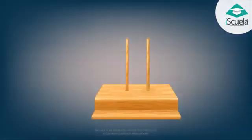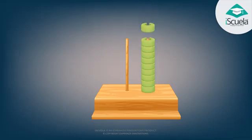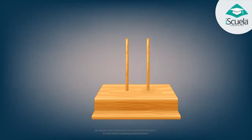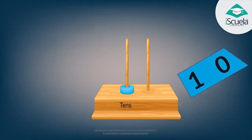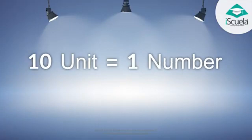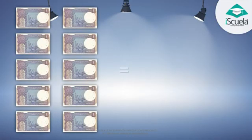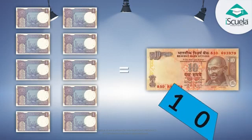Good. As we can put only nine beads in one stick, we will put one bead in the second stick instead of ten beads in the first stick. The second stick is for the place value of ten — hence we call it the tens place. Ten ones are equal to one ten.